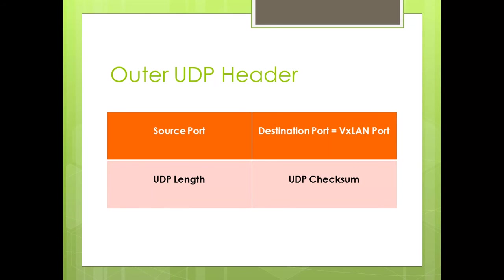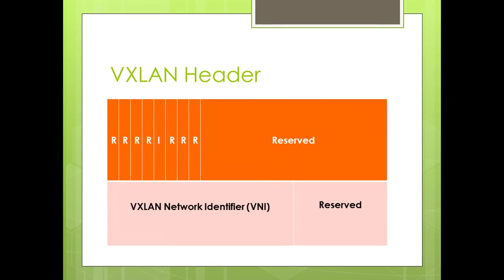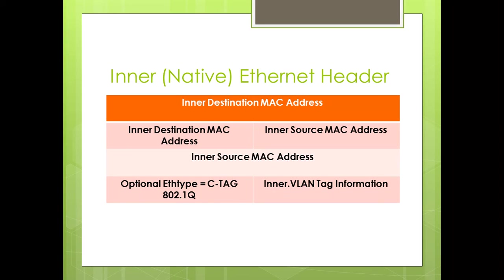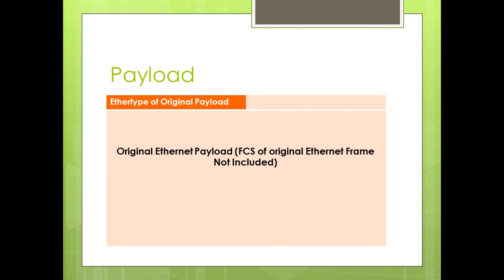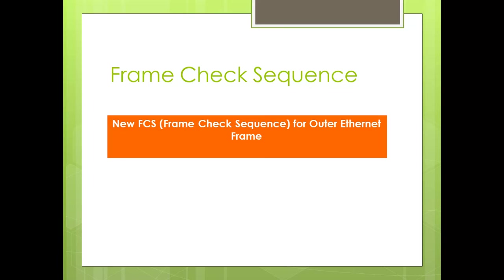To recap the full frame structure: the outer UDP header has a source port and a destination port, where the destination port must always be the VXLAN port 4789. The VXLAN header contains the I-bit (5th bit), which when set indicates a valid VNI is present. The VNI is a 24-bit field, with two reserved fields of 24 bits and 8 bits. This is followed by the inner or native Ethernet header, the original Ethernet payload, and a new FCS for the outer Ethernet frame. Note that the FCS of the original Ethernet frame is not included.